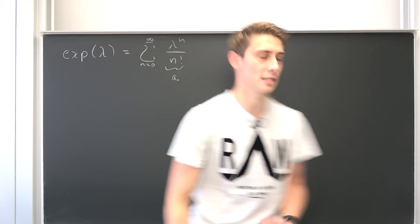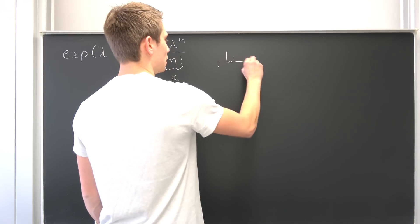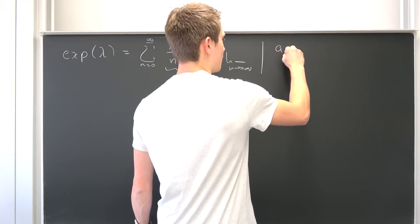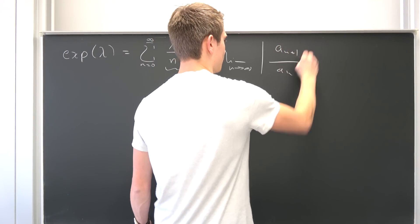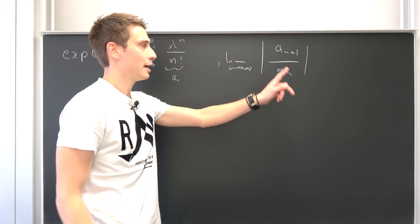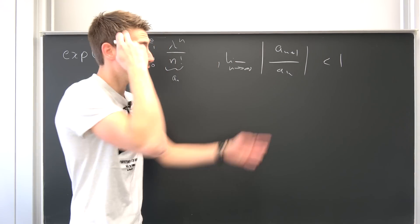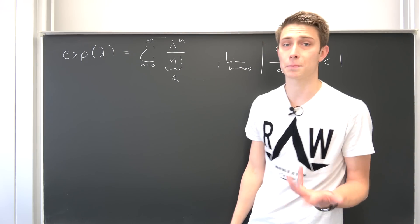And the ratio test is as follows. We are going to take the limit as n approaches infinity of the absolute value of a_(n+1) over a_n. That's why it's called the ratio test. And if this ratio is strictly less than 1, well, then this thing converges. Absolutely.